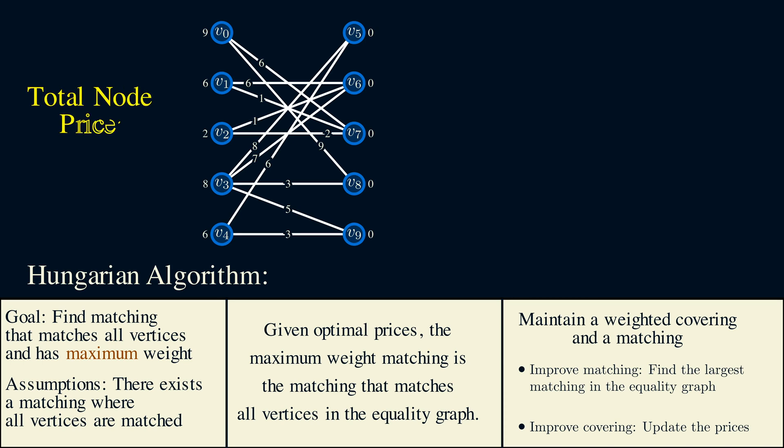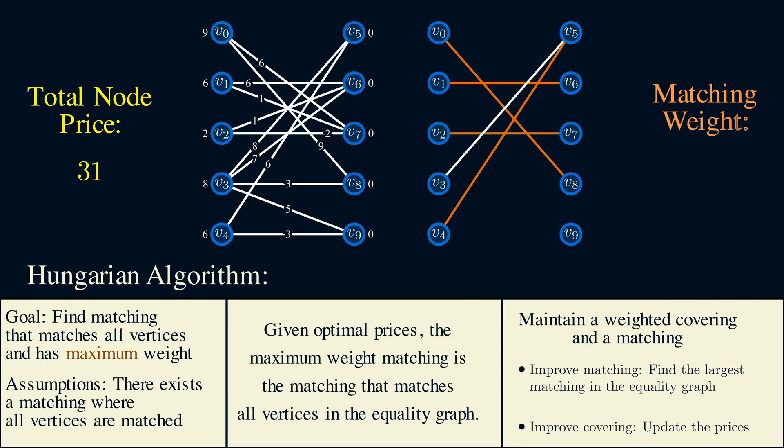The current total vertex price is 31. From these vertex prices, we can form the equality graph. We then find the largest size matching in the equality graph. This can be done with the augmenting path algorithm I discussed in the previous video, so I won't talk about this too much. Now, the current total weight for our matching is 23. If these two numbers are not the same, then we're not done yet. We need to increase the size of the matching.